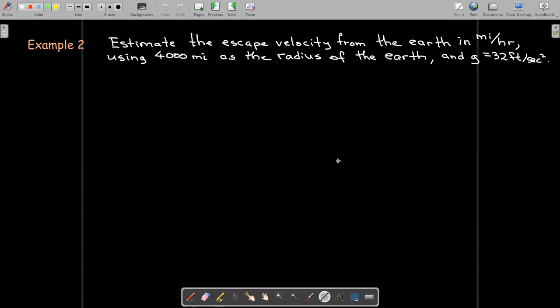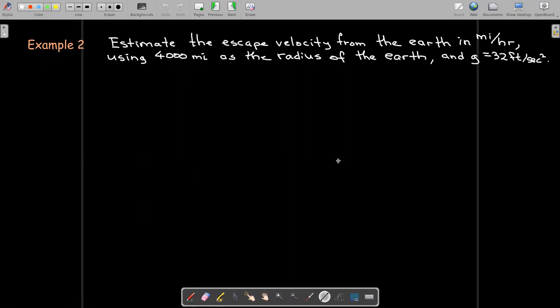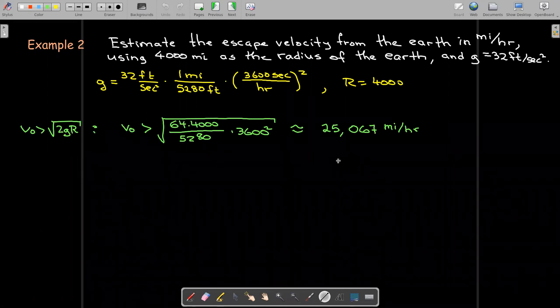So the escape velocity should be more than √(2gR). Let's estimate the escape velocity from the Earth in miles per hour. We're going to use the estimate of the radius of the Earth to be 4,000 miles, and we use the acceleration due to gravity as 32 feet per second squared. We've got to do some unit conversions with our g in order to get things in terms of miles per second squared. Then just substitute into our formula. That gives an answer of about 25,000 miles per hour.